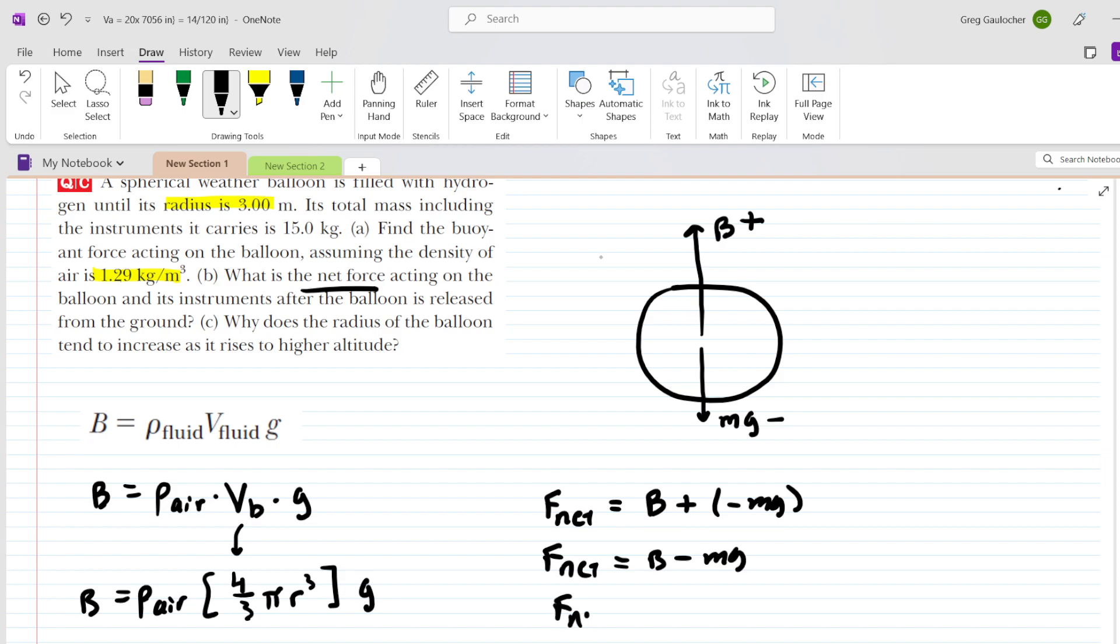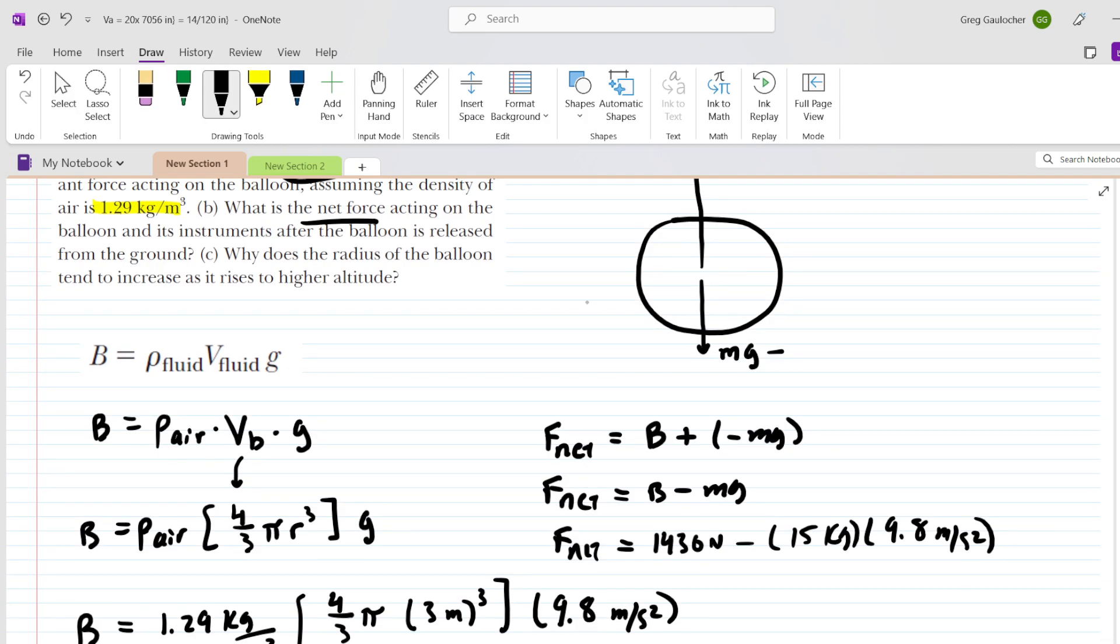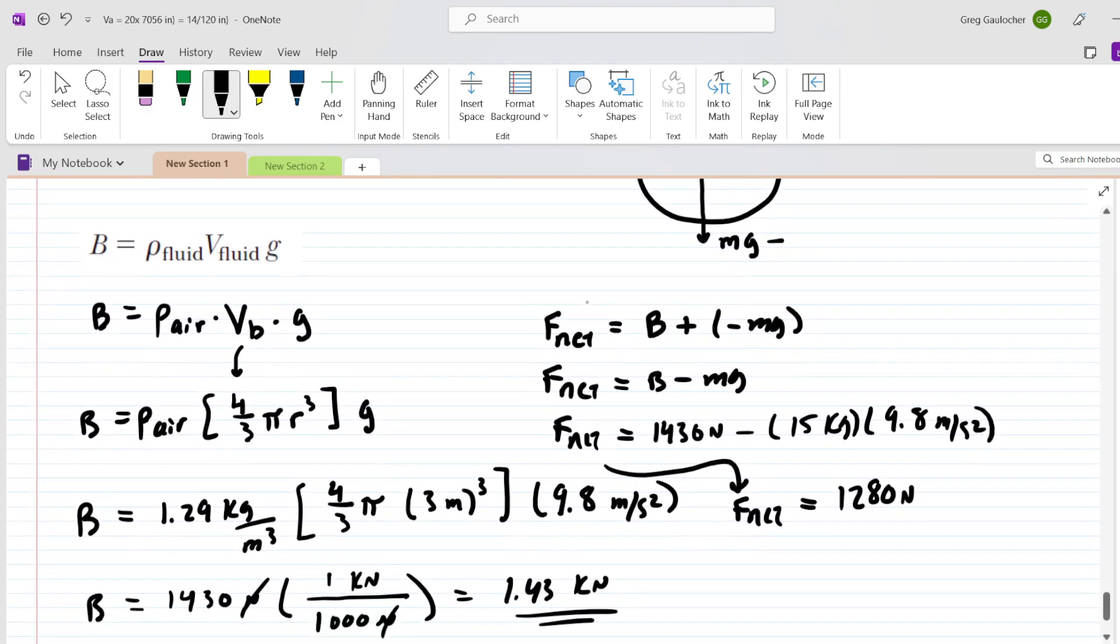We know the buoyant force, and we know the mass. The mass was given as 15 kilograms. G is 9.8. So let's plug everything in. When you simplify that, you will see that the net force is a positive 1,280 newtons. Because it's positive, that means the net force is upward.